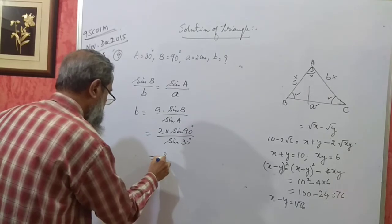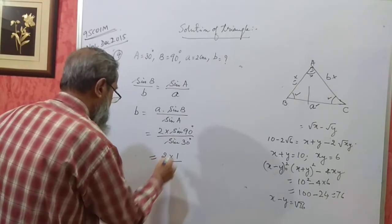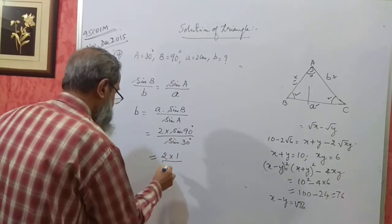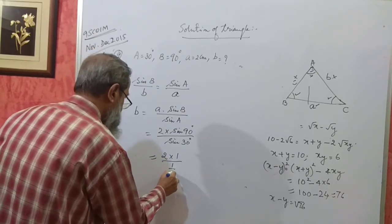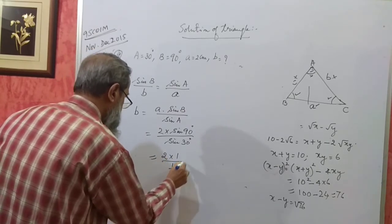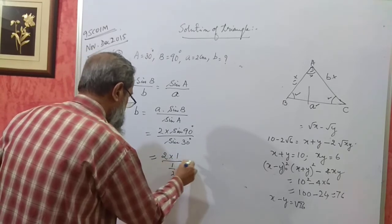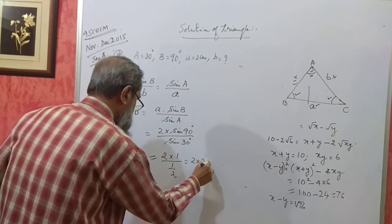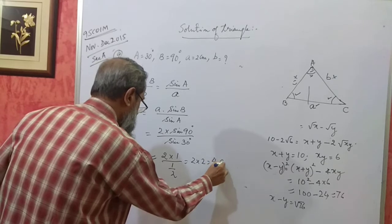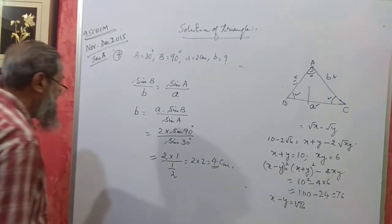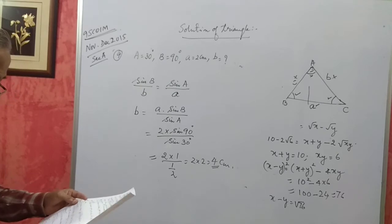So 2 into 1 divided by sin 30, which is half. 90 degrees gives 1, and half gives 2, so 2 into 2 that becomes 4 centimeters. B will be 4 centimeters.